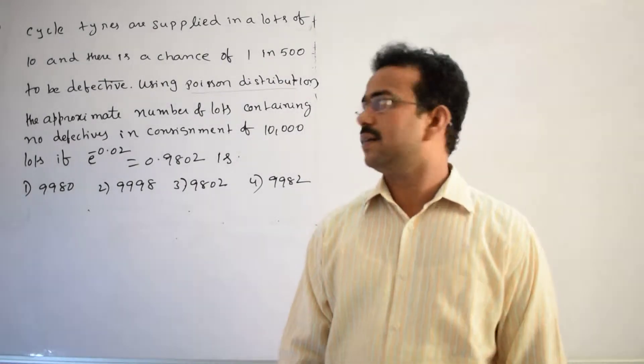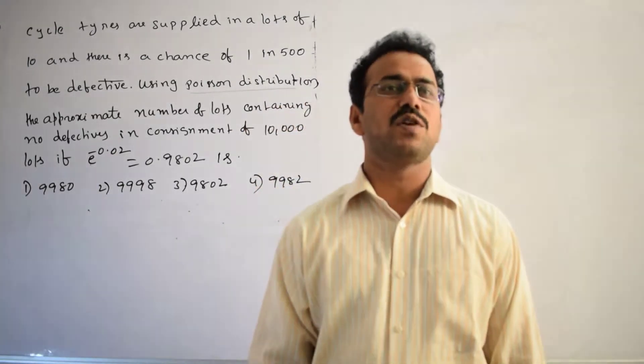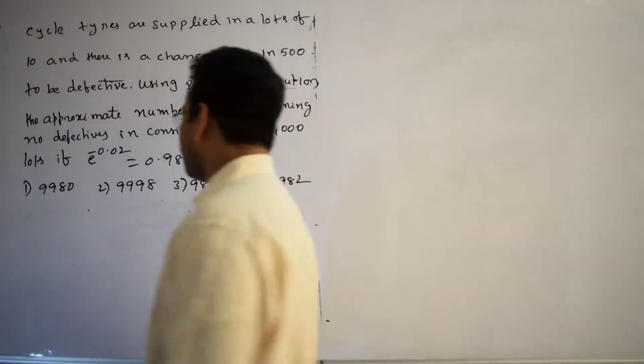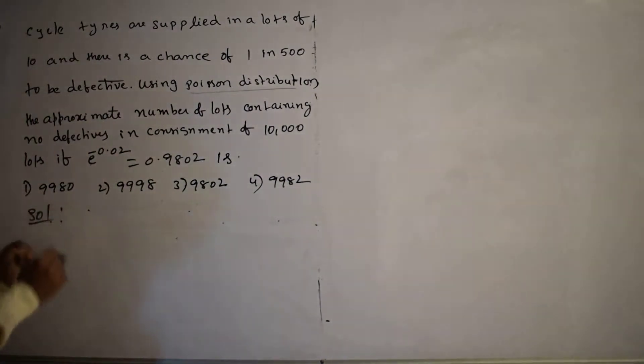Here, clearly in the given problem they mentioned that we have to use the Poisson distribution. First, calculate the Poisson distribution. What is the probability mass function of Poisson distribution?